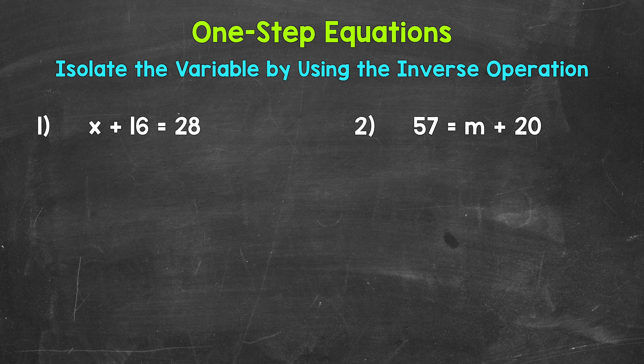Let's jump into number 1, where we have x plus 16 equals 28. We need to isolate that variable of x — we need to figure out what x equals. Since 16 is being added to x, we need to undo that addition by using the inverse operation. The opposite of addition is subtraction. So let's subtract 16 from the left side of the equation. Whatever we do to one side of the equation, we must do to the other in order to keep it balanced and equal.